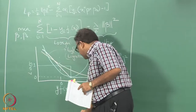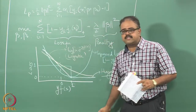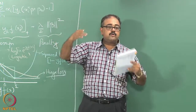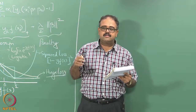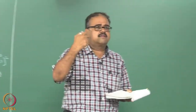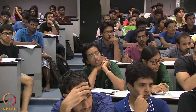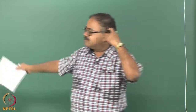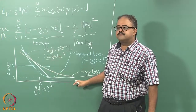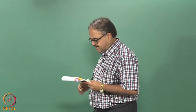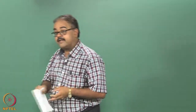We also looked at the logistic loss function, which is what we actually minimize in logistic regression — even though we did not write it out explicitly as a loss function. In logistic regression we did maximum likelihood: we made assumptions about the distribution and maximized the likelihood. If you write that out as a loss function, you get the logistic loss, which never goes to 0. But you can still minimize it. We will come back to the logistic loss function later.